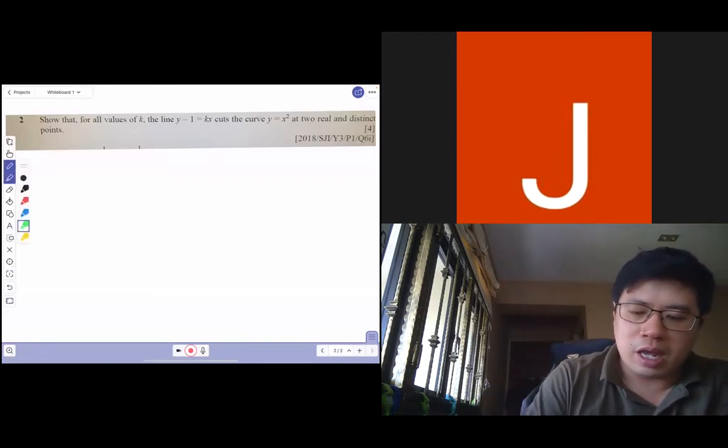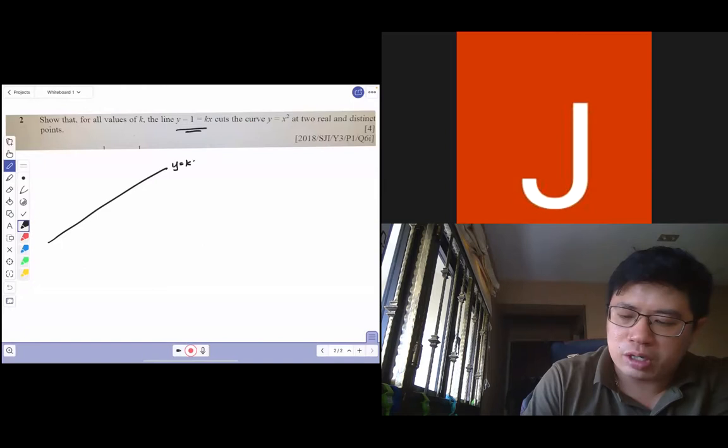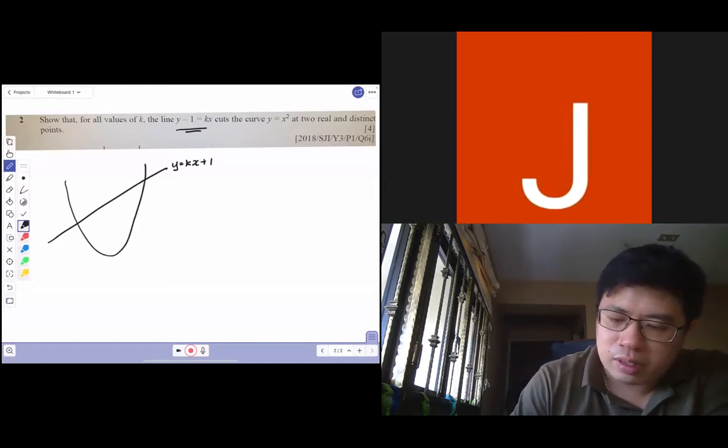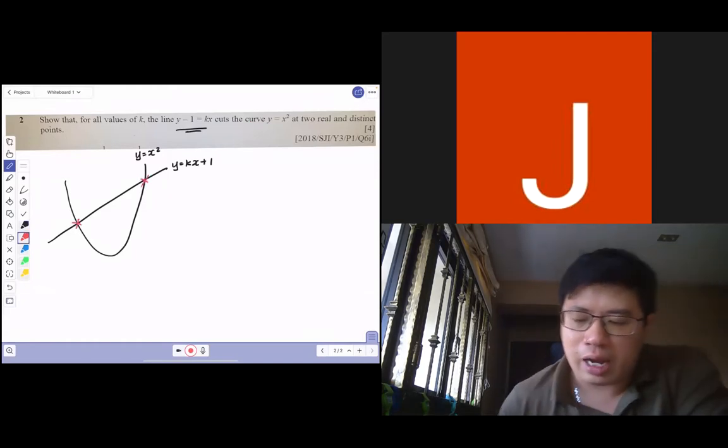When you're talking about a line here, I don't know what the line looks like. It probably looks something like this. Let me just make y the subject. And the second curve, y equals x squared. So the graph looks something like that. They cut at two distinct points.